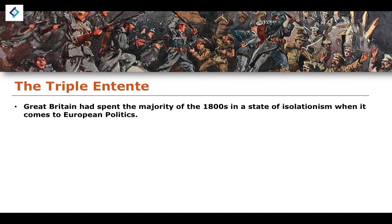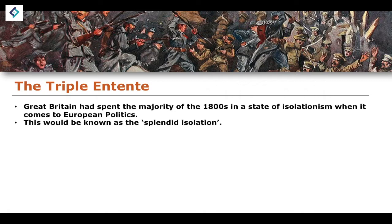Great Britain had spent the majority of the 1800s in a state of isolationism when it came to European politics. They decided to stay away from European politics for the majority of the 1800s. That's what isolationism refers to — the idea that a country isolates itself from international politics. Another example of isolationism took place in America in the 1920s, when they cut themselves off from a lot of international politics. In Britain, this became known as the Splendid Isolation.